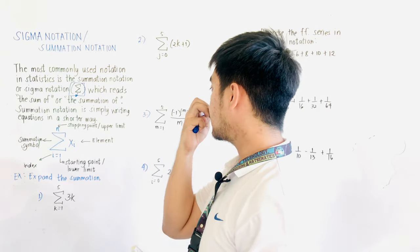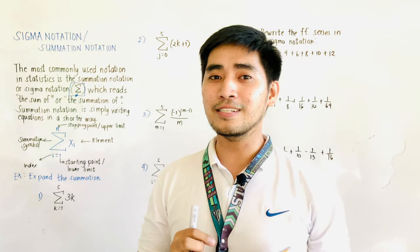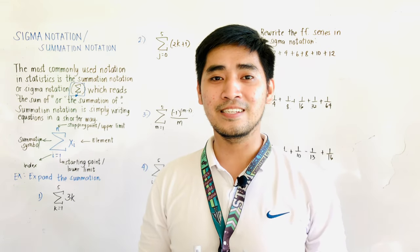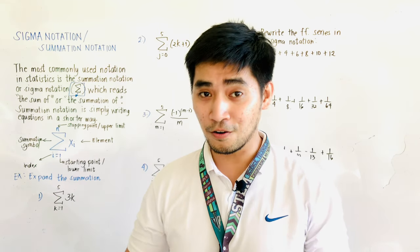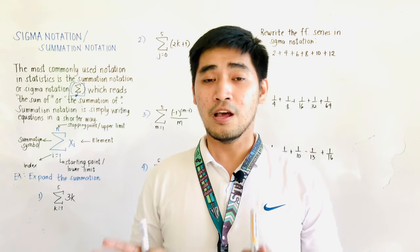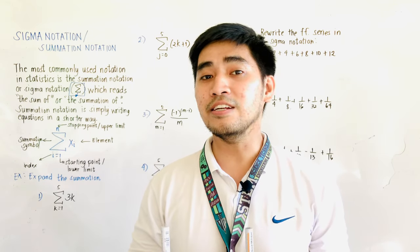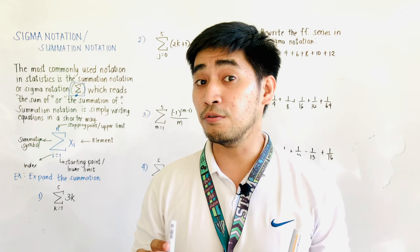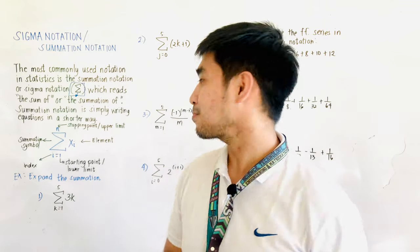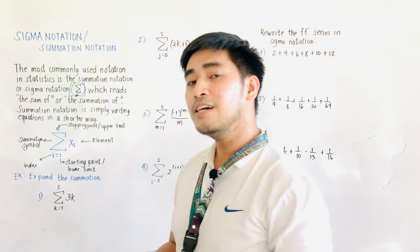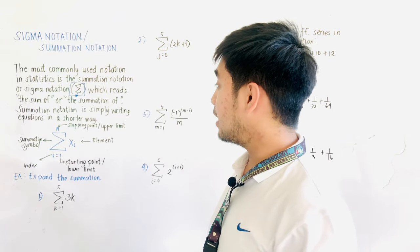Summation notation is simply writing equations in a shorter way. Last time we were able to discuss sequence and series, which are much longer than simple equations. In order to write sequences and series in a much shorter version, we will be using summation notation.